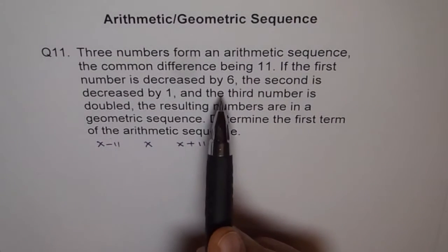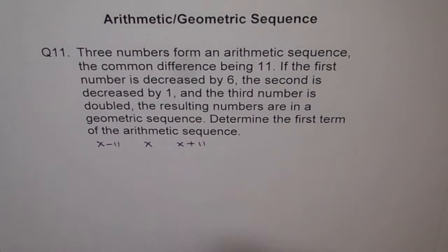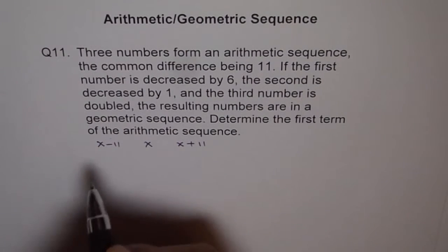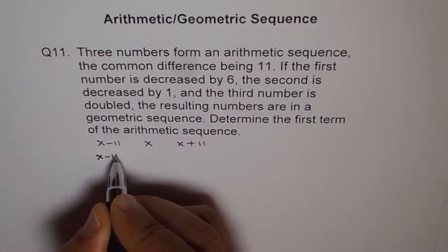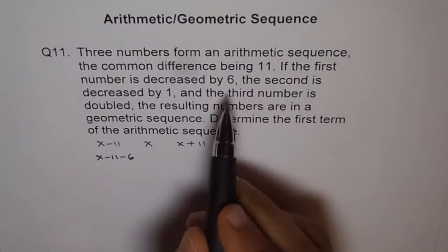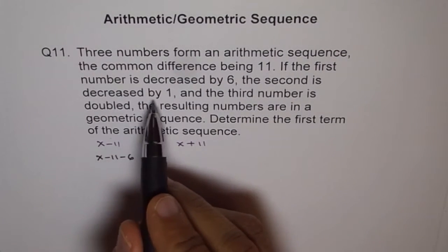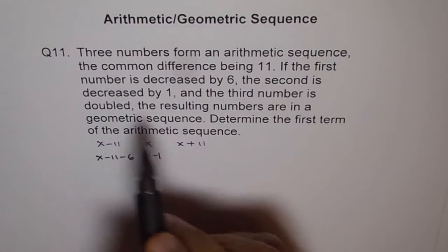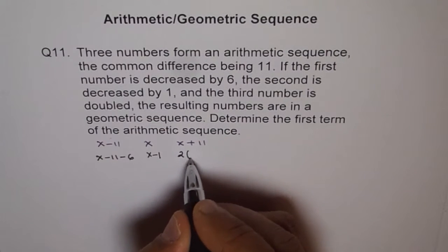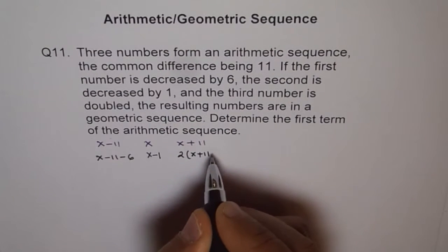If the first number is decreased by 6, so what we are trying to do here, let me do it here. First number decreased by 6 means it becomes x minus 11 minus 6, correct? And the second number is decreased by 1, that means I will do this as x minus 1. And the third number is doubled, that means I do this 2 times x plus 11.